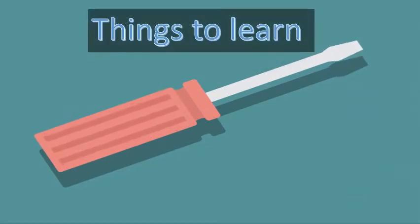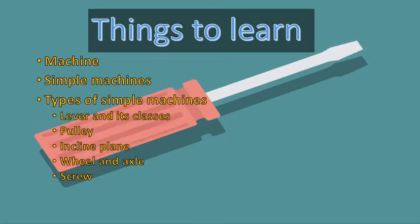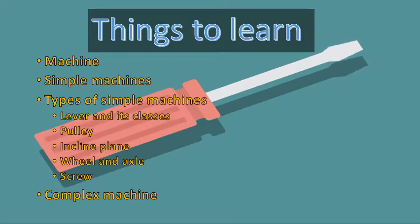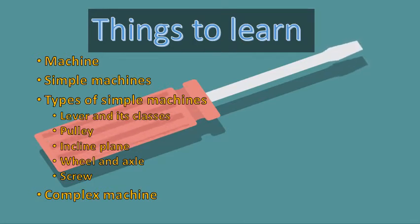The things to learn include: machines, simple machines, and types of simple machines — lever and its classes, pulley, inclined plane, wheel and axle, and screw. Lastly, we will learn about complex machines and how they are different from simple machines. We have already discussed lever, pulley, and inclined plane. Today's lecture covers wheel and axle, screw, and complex machines.